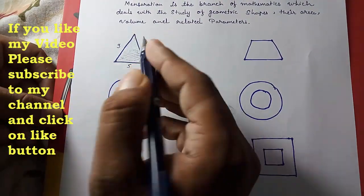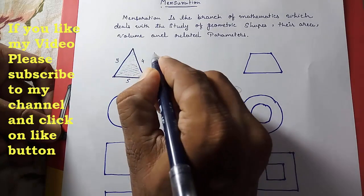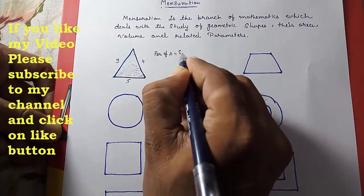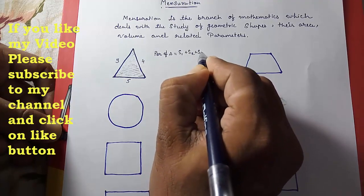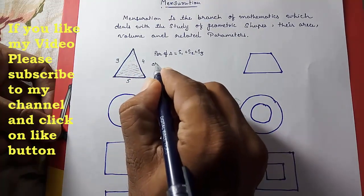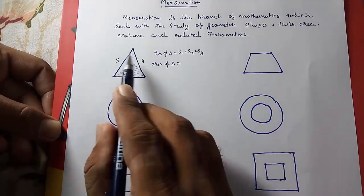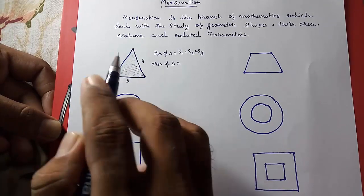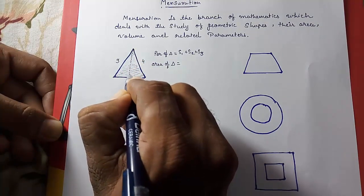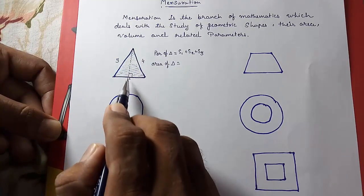So first, this is a triangle — everybody knows this is a triangle. If we want to find the perimeter of this triangle, the perimeter of a triangle equals side 1 + side 2 + side 3. If we want to find the area of this triangle, we cannot directly find it. We have to find the height first — the height is also called altitude, and it is always perpendicular. So we need height and base.